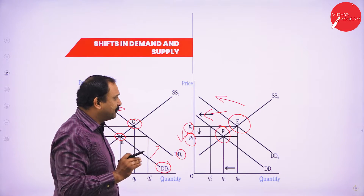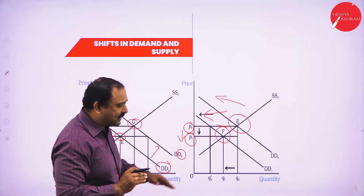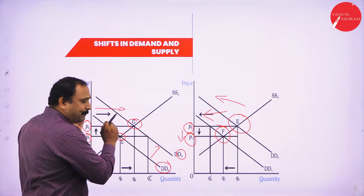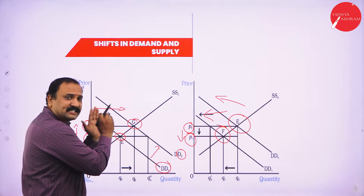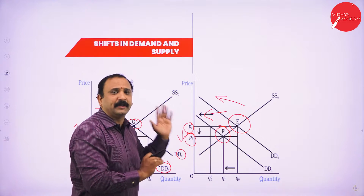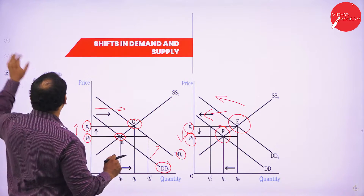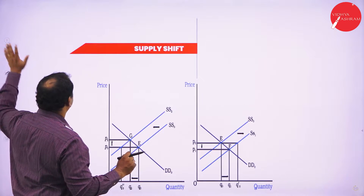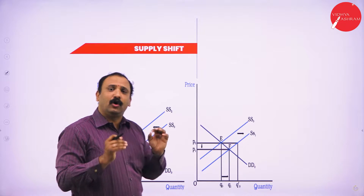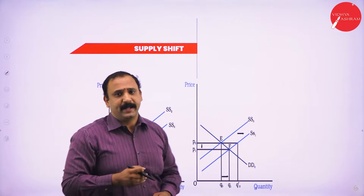So all we have to keep in mind: taking price on the y-axis and quantity on the x-axis, we look at what happens when the price increases and what happens when the price decreases — and how the supply shifts altogether.